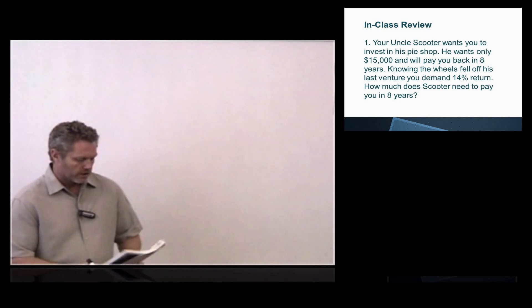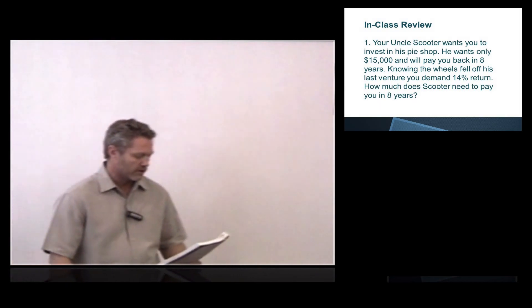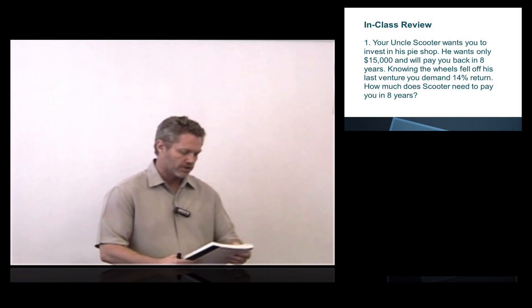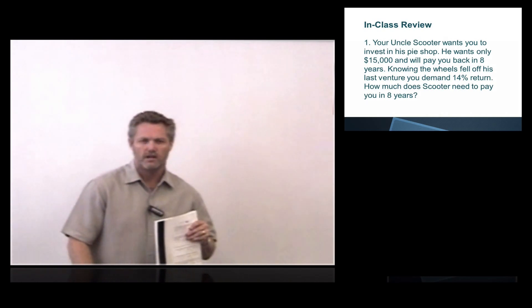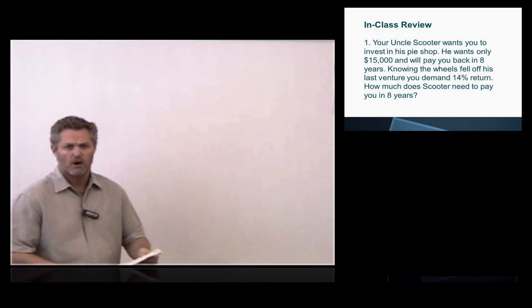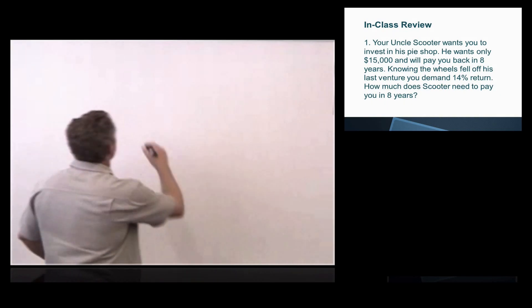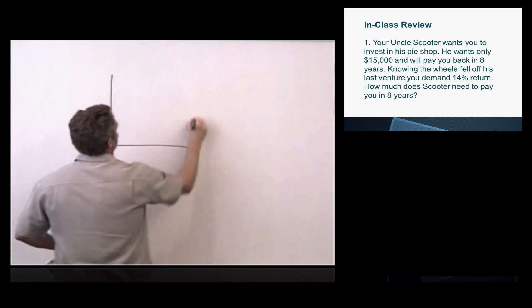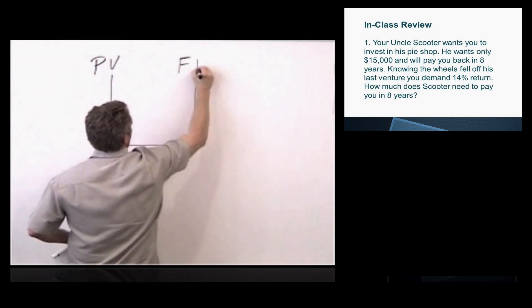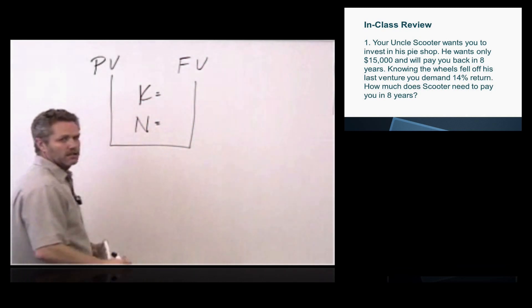Your Uncle Scooter wants you to invest in his pie shop. He wants only $15,000 and will pay you back in eight years. Knowing the wheels fell off his last venture, you demand 14%. Why are we demanding such a high interest rate? Because the wheels fell off his last venture, he's got a bad track record, bad credit history probably, so we need a higher rate of return. How much does Uncle Scooter need to pay you in eight years? We make this box: Present value, future value, K, N. K stands for interest rate, N is the number of periods.